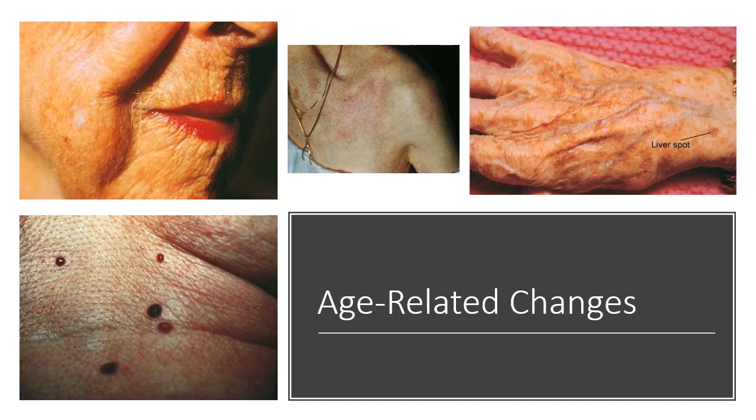In aging skin we see loss of elasticity and developing wrinkles; increased facial hair growth in postmenopausal women is normal. We also see increased sunburn risk with age, senile lentigines (liver spots) — benign pigment changes — and cherry hemangiomas from growth and dilation of the capillaries.